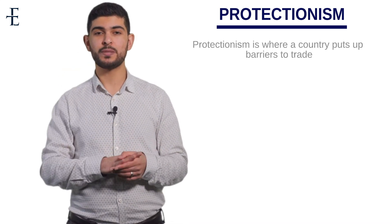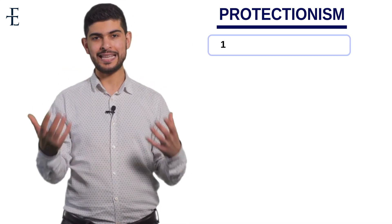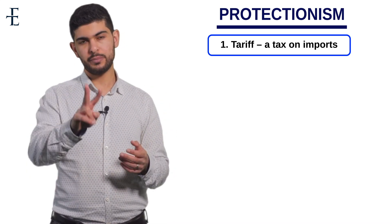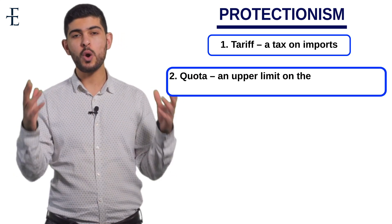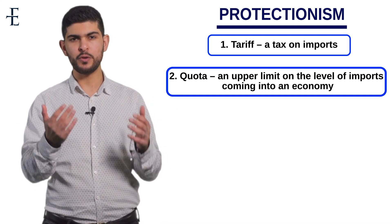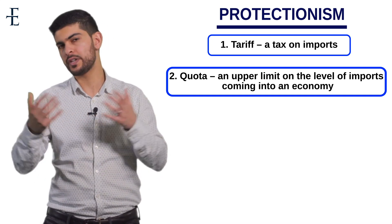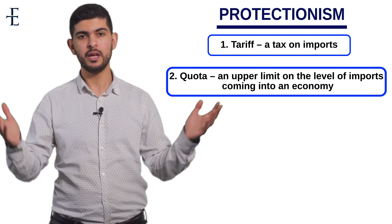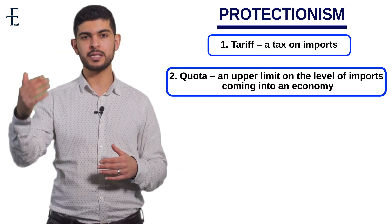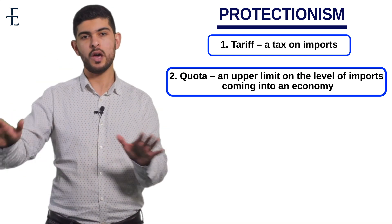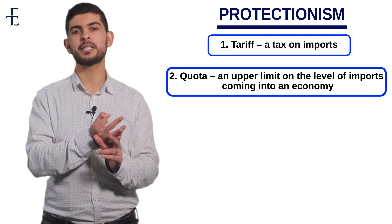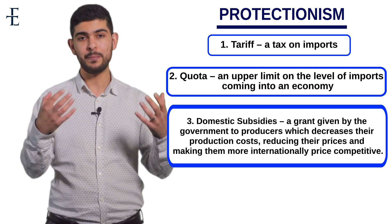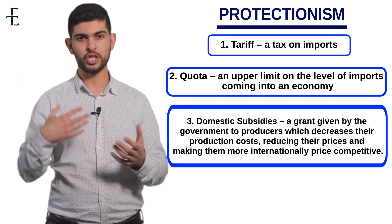There are three types of protectionist policies that you need to know. Number one is a tariff — a tax on imports. Number two is a quota, which is an upper limit on the number of units you allow into your economy. For example, a quota of a thousand bananas means only a thousand bananas can be imported into the UK — nothing above that. Number three is domestic subsidies, which give an unfair advantage to your firms domestically over competition around the world.